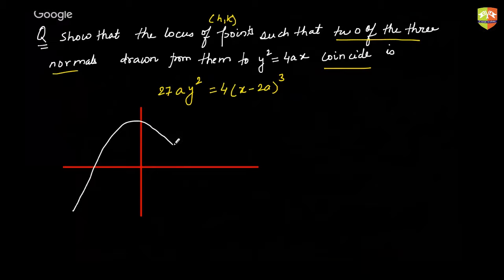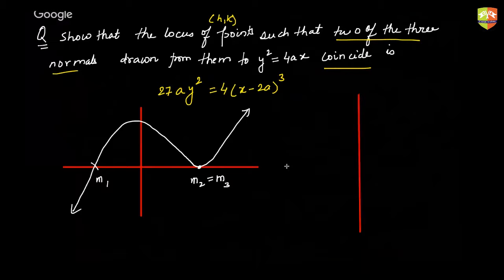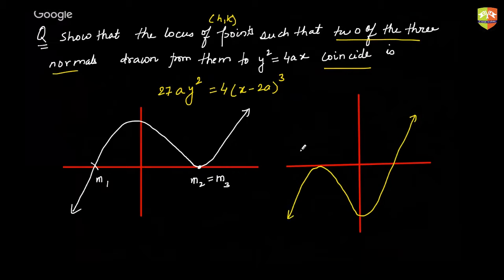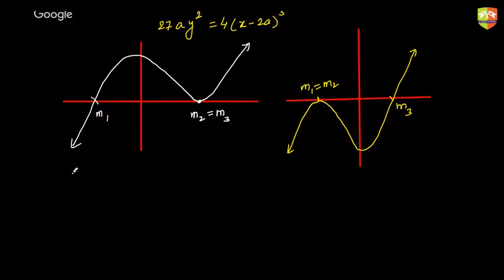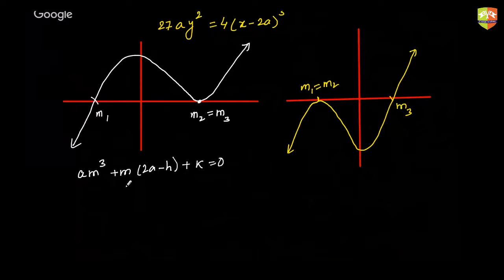So this time it is something like this — it touches and goes back. Let's say this is your m1, and here m2 and m3 would be the same. It could be this way as well — it could come like this, touch and go back. That means the two equal roots are m1 = m2 and this is your m3. So h, k will satisfy the equation of the normal, and let's call this term f(m).